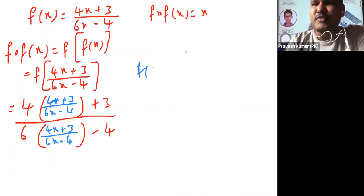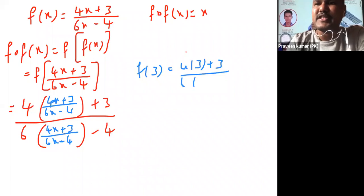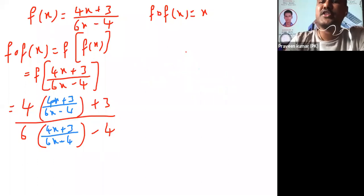4x plus 3 by 6x minus 4. 4x plus 3 by... This is called substitution method. Suppose f of 3 we want, means what we are writing: 4 into 3 plus 3 by 6 into 3 minus 4. Now similarly, in place of x here I substituted the complete value. Now I can take LCM in the numerator. I'll take LCM in the numerator.